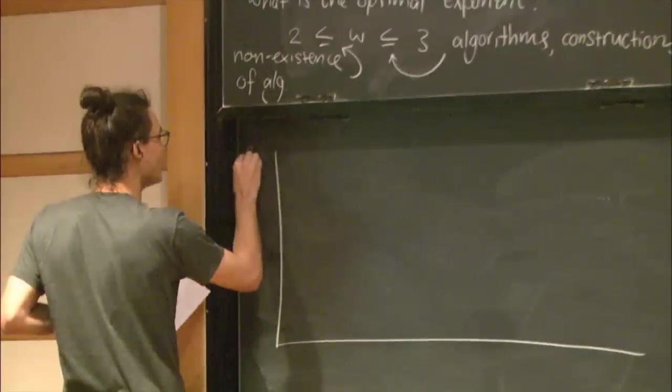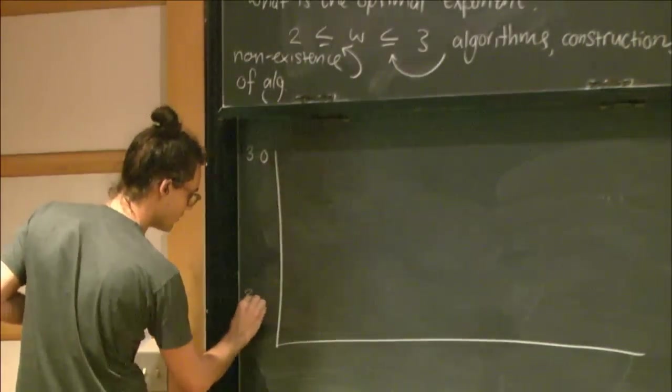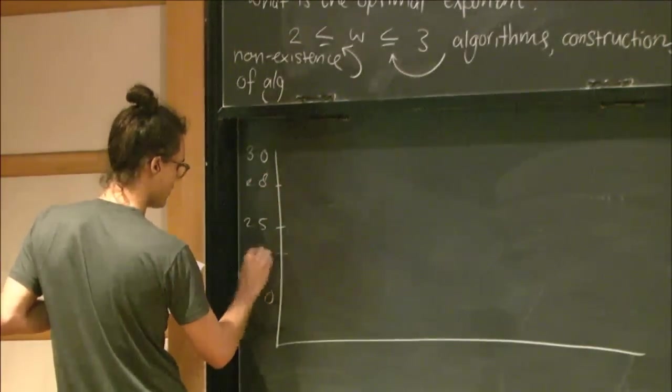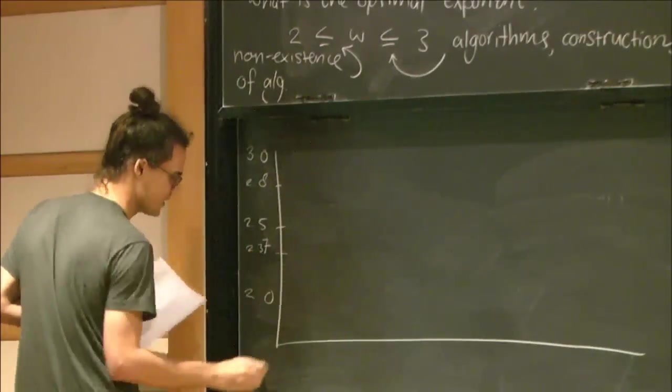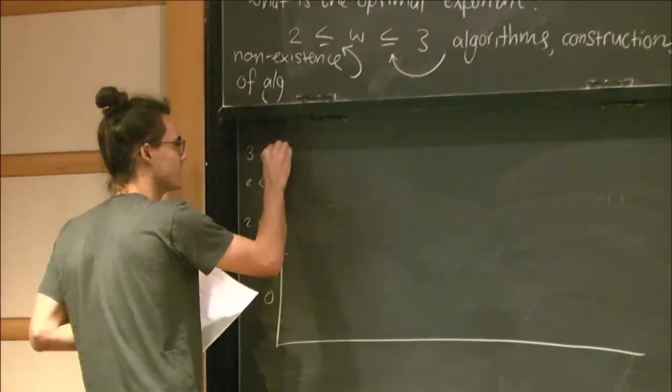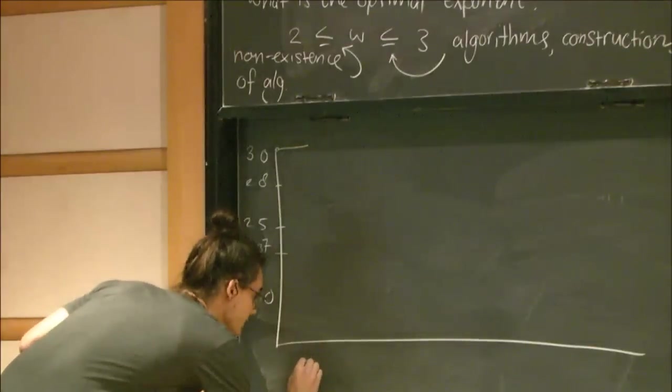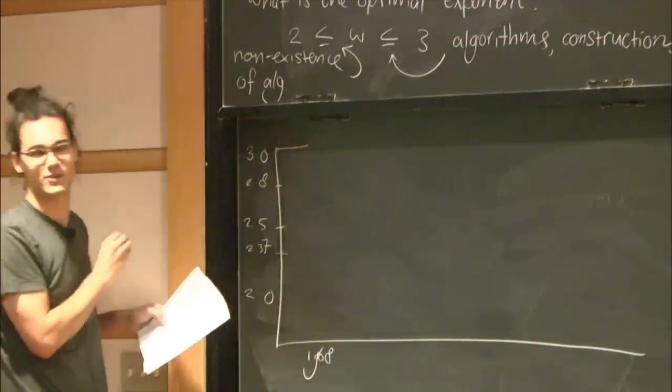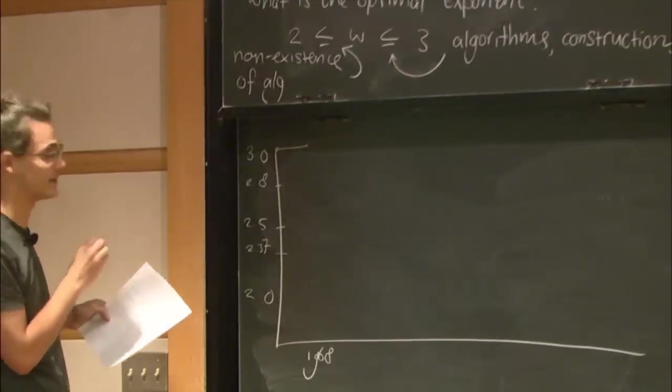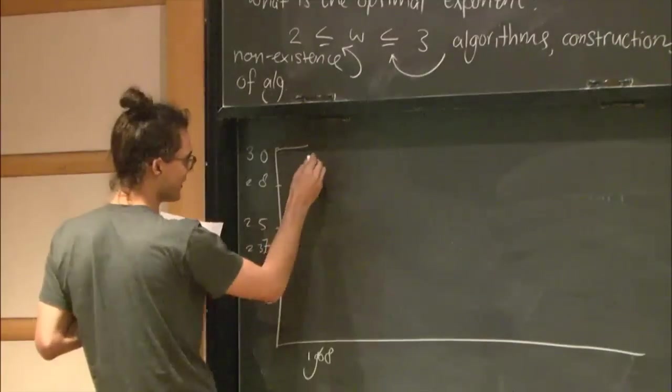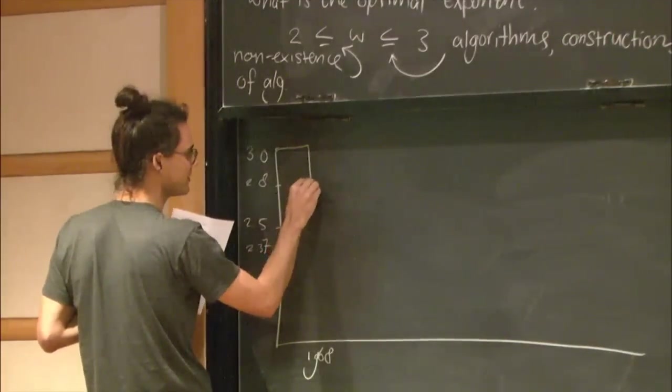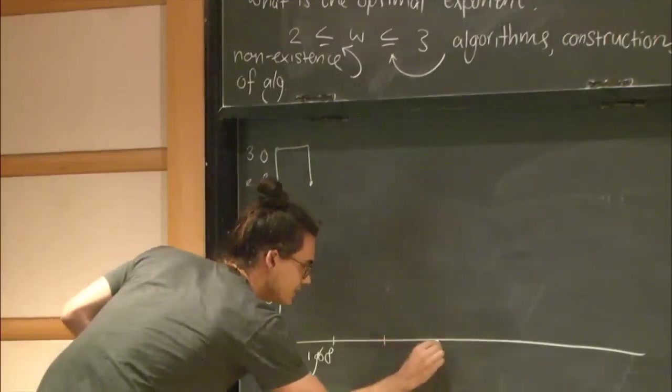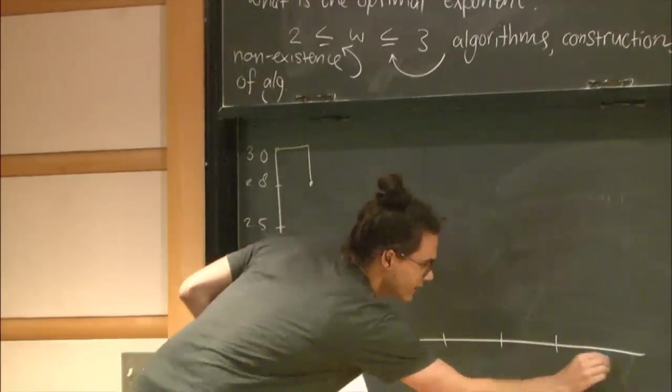So 3.0, 2.0. All right. So 3.0 we start. And then, so what happened? In 1968, Strassen, Volker Strassen, came up with an algorithm to do it better. And the exponent he obtained is roughly 2.8. So that's the first improvement. I should mark this. So we're here.